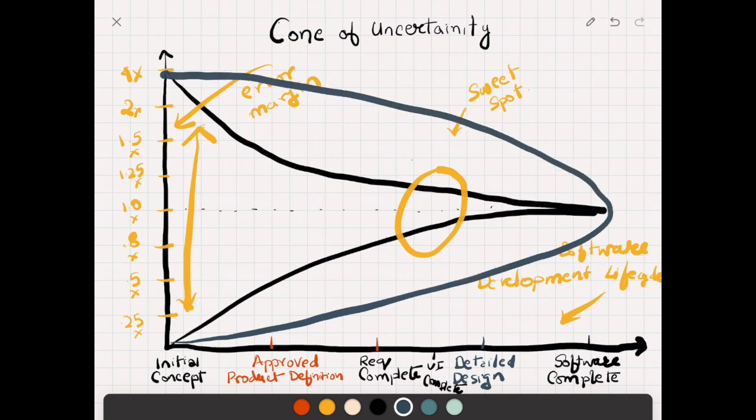If there were no proper project control, no progress estimation, it was more like a cloud kind of thing. So that is cone of uncertainty. Initially the uncertainty is very high, as we progress the uncertainty becomes low.